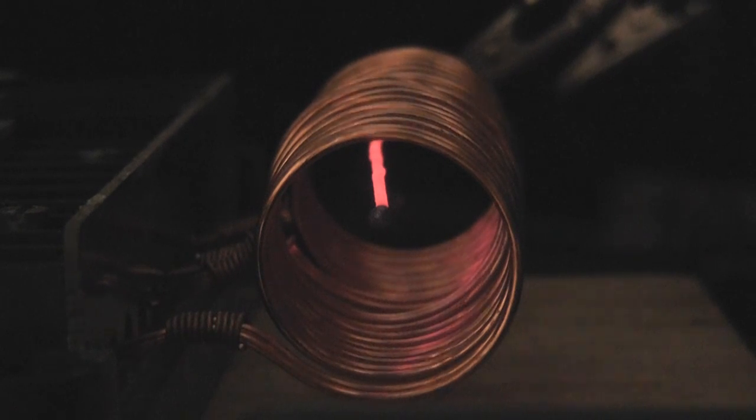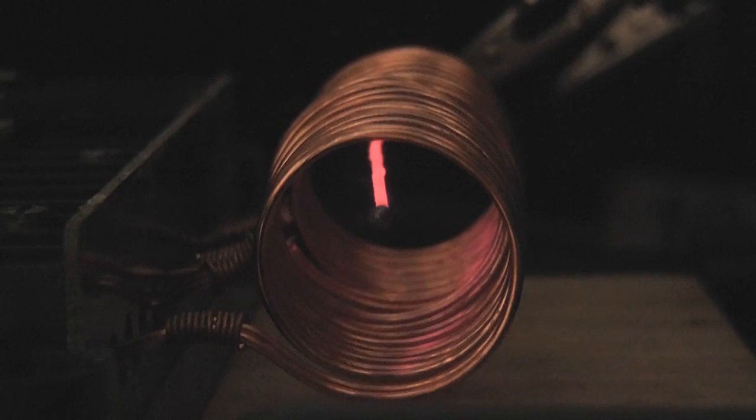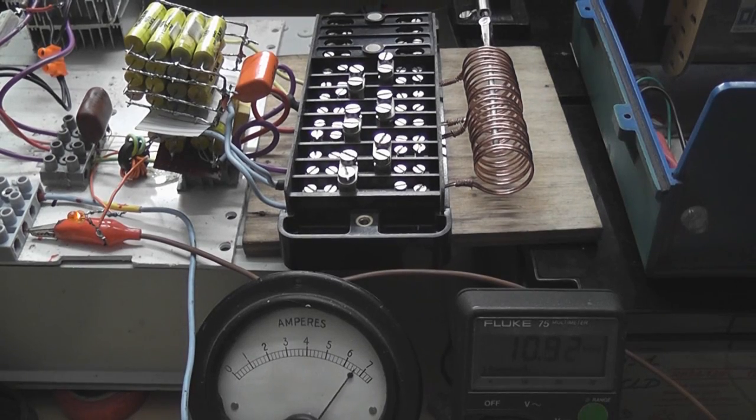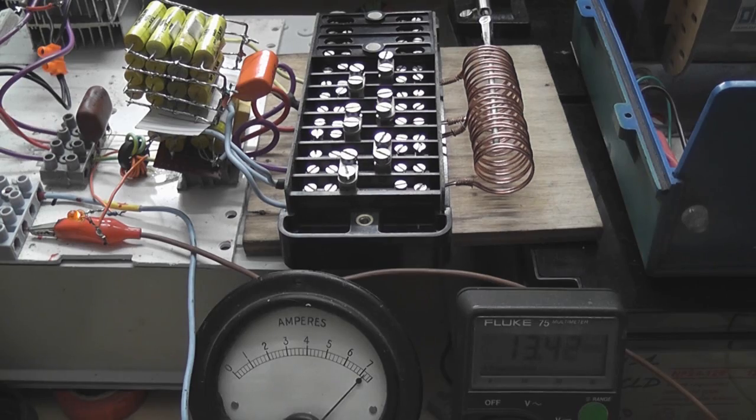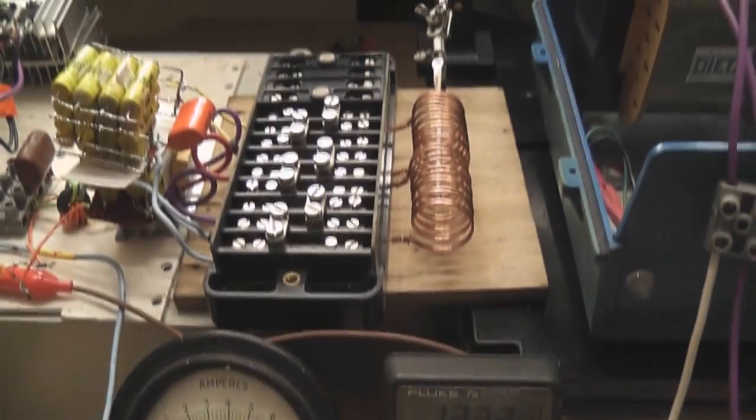MOSFETs are warm but not too hot. Fourteen volts, ten volts. We've got a thicker roof piece here. Wrapped up to seven ampere at about 13 volts. Seven ampere at 12.4 volts.